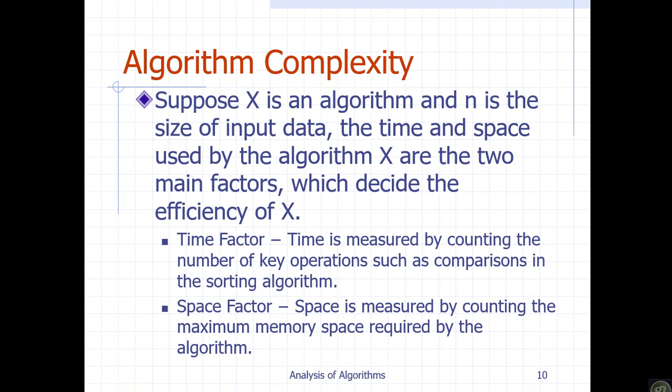We have used algorithms. Algorithms take an input of size n, where n represents the input size. Let's suppose x is an algorithm for a specific problem. The algorithm x processes input data of size n and produces a result. When we talk about algorithm complexity, we consider two key factors: time and space. Algorithm complexity determines the efficiency and effectiveness of an algorithm. Time complexity is measured by counting the number of key operations performed.